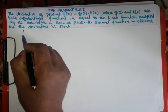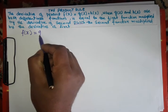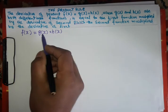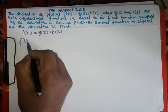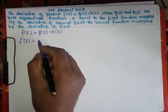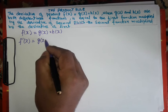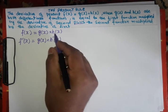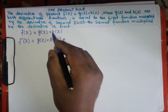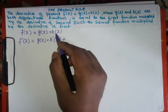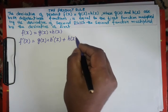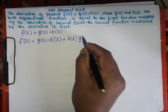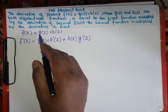That is, if f(x) is equal to g(x) times h(x), the derivative of f(x) is equal to: we write the first function as it is, g(x), and take the derivative of the second function, that is h'(x) — h'(x) means derivative of h(x) — plus, now we write the second function h(x) as it is, and take the derivative of the first function, that is g'(x), the derivative of g(x).